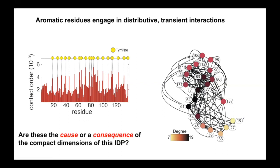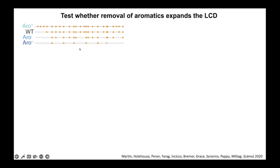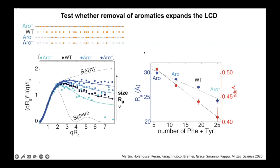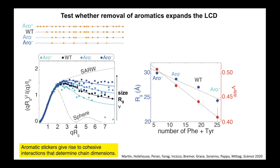The question was: are aromatic residues interacting strongly because the chain is compact, or are they causing compactness? To test this, we made variants of the LCD where we removed one-third, two-thirds, or added another third of the aromatic residues. Using small angle X-ray scattering, we looked at the radius of gyration and scaling exponent, and saw indeed that the higher the number of aromatic residues, the more compact was the protein. This showed that aromatic residues are the stickers — they give rise to cohesive interactions that determine the chain dimensions.